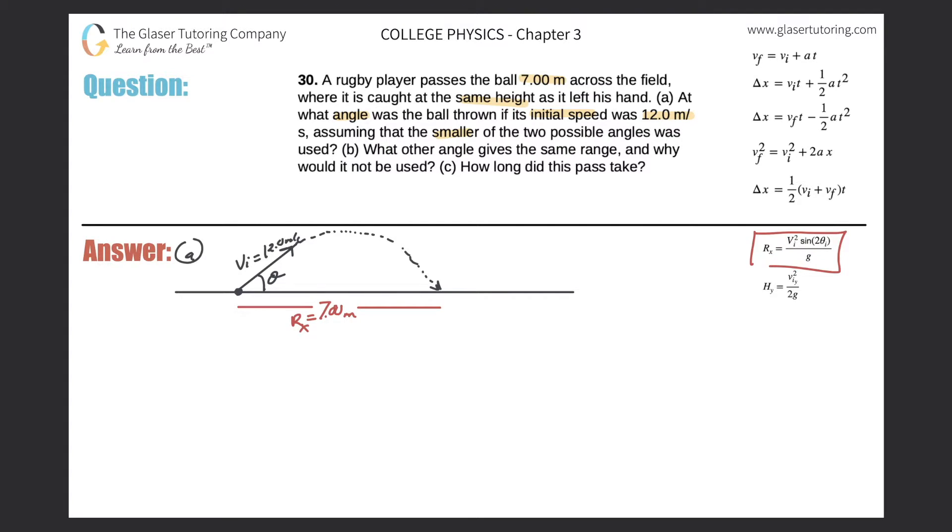Let's write that formula out. The range of x equals the initial velocity squared times the sine of 2θ, all divided by g. Let's plug in what we know: the range is 7, the initial velocity was 12 meters per second squared, times the sine of 2 times my initial angle, divided by 9.80. Cross multiply: 7 times 9.8 equals 68.6.